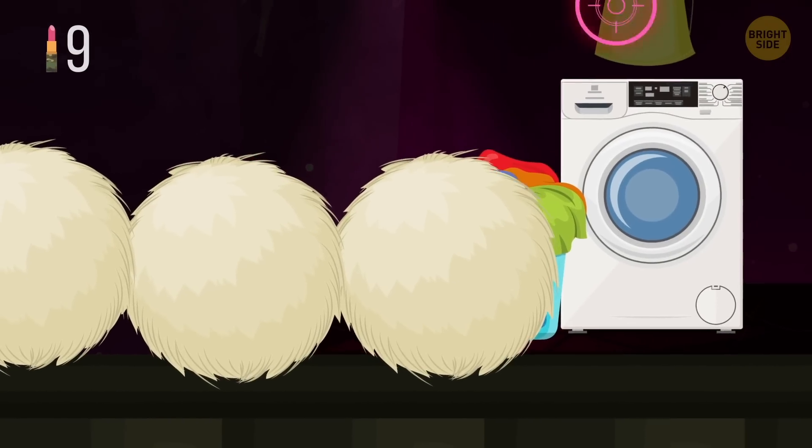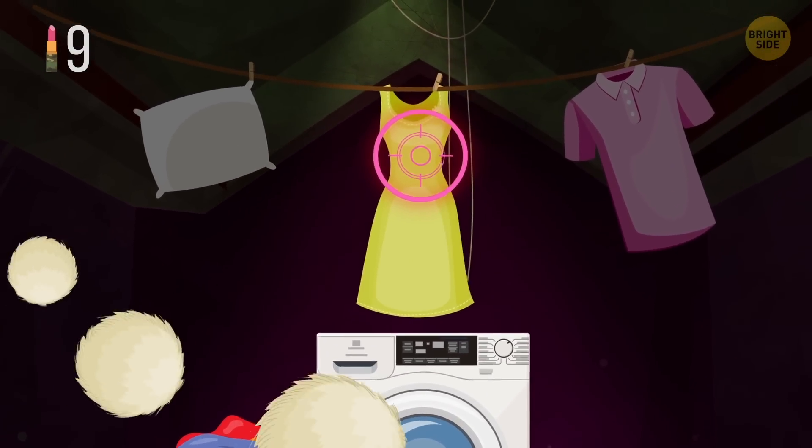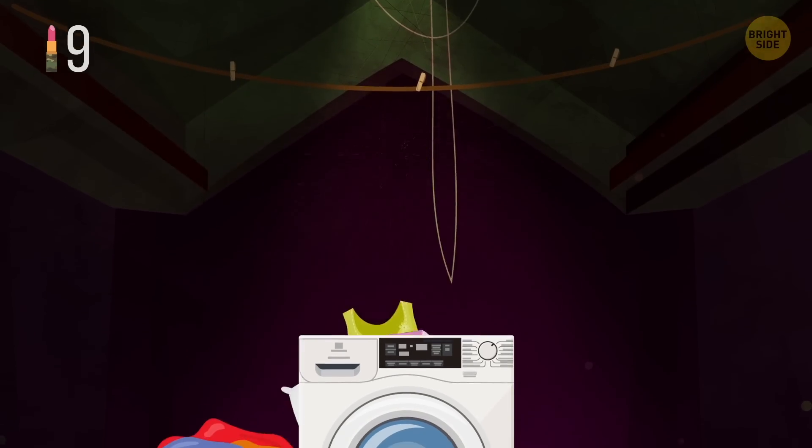Your bed linen and clothes will be a lot softer if you put several neutral-colored balls of wool into the dryer.